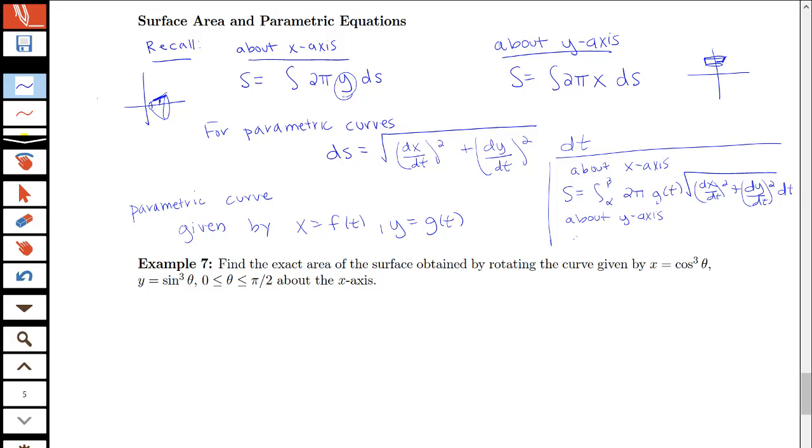And about the y-axis, we'll have the surface area is an integral from α to β of 2π f of t, and then again times the square root of dx/dt squared plus dy/dt squared. And we have the same conditions here on our f and g that we had for arc length, that f prime and g prime need to be continuous, and we need to look at just having this part of the curve traced out just once before we do the rotation.